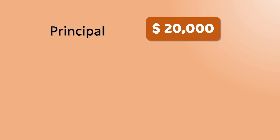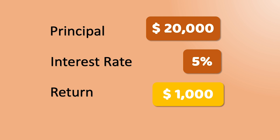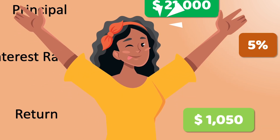Now let's say you make a deposit of twenty thousand dollars into a savings account that offers compound interest at an annual rate of five percent. After one year, your return will also be one thousand dollars. But remember, compound interest is earned on both your initial investment and interest previously accrued — so after two years, your return will be one thousand and fifty dollars: five percent of your twenty thousand dollar principal plus the first year's earned interest of one thousand dollars.